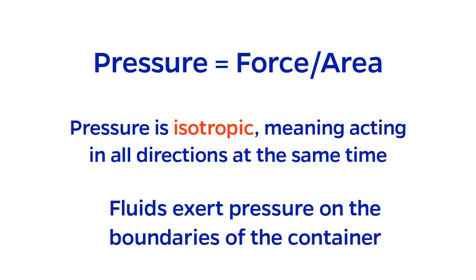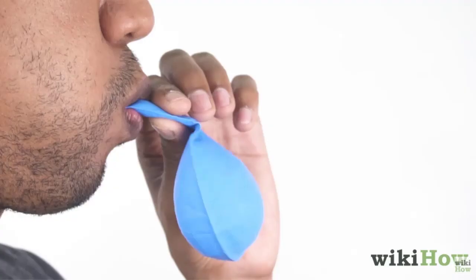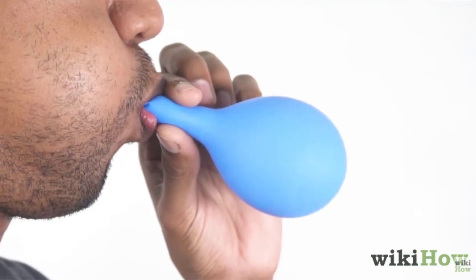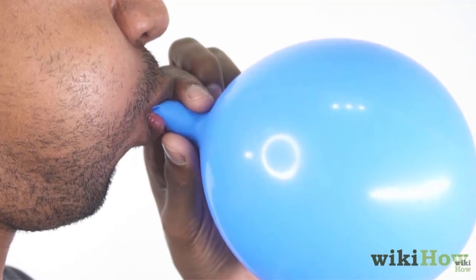A fluid under pressure in a vessel or pipe exerts a force on the walls of its container. If the container is not rigid, like this balloon, the boundaries of the container will move outward in all directions equally.